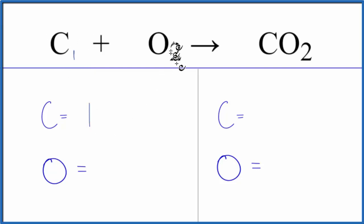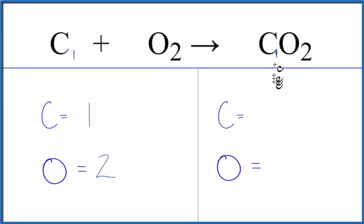Here the subscript is two, so we have two oxygen atoms. Over here on the product side of the equation, we have the one after the carbon — nothing written, we assume it to be one — and then we have two oxygen atoms.